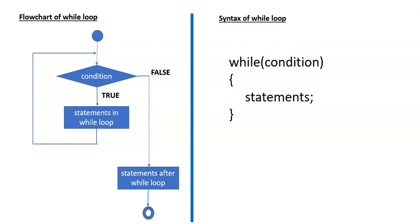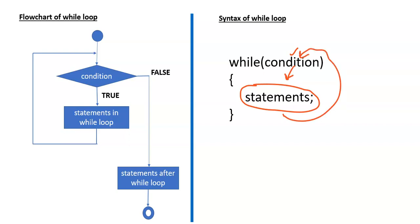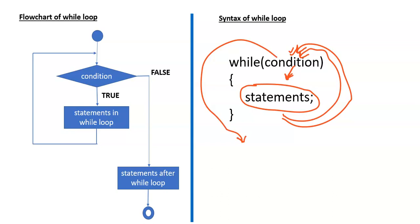Now we will see the syntax part. This is the simple syntax. Initially, whenever the condition is true, the program control enters into the while loop and executes the entire body. When execution is completed, the program control goes back to check the condition again. If the condition is true, it enters the while loop again and all statements are executed. This process is repeated, and whenever the condition becomes false, the program control moves out of the while loop. Whatever statements are left after the while loop are then executed. In this fashion, a while loop is executed by the C program.